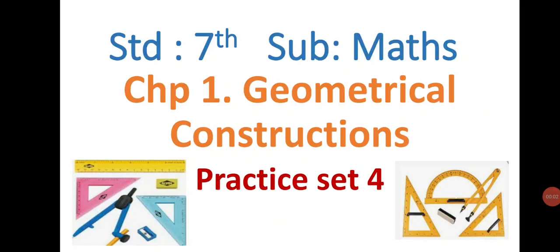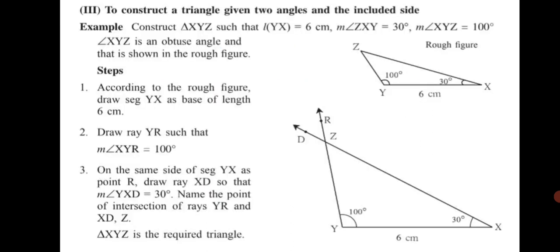Standard 7th subject maths, chapter 1 geometrical constructions, practice set 4. Dear students, in the previous practice set you learned how to construct a triangle given two sides and the angle included by them. Now in this practice set you are going to learn to construct a triangle given two angles and the included side.